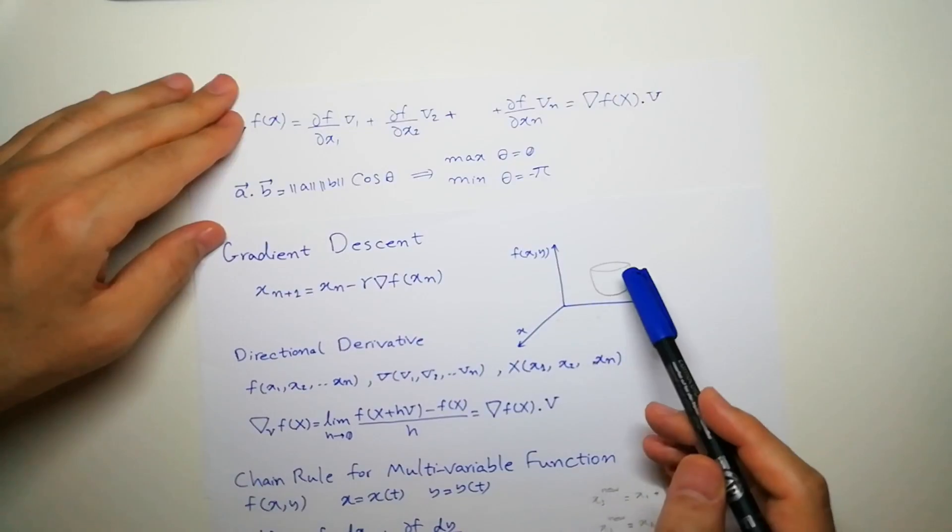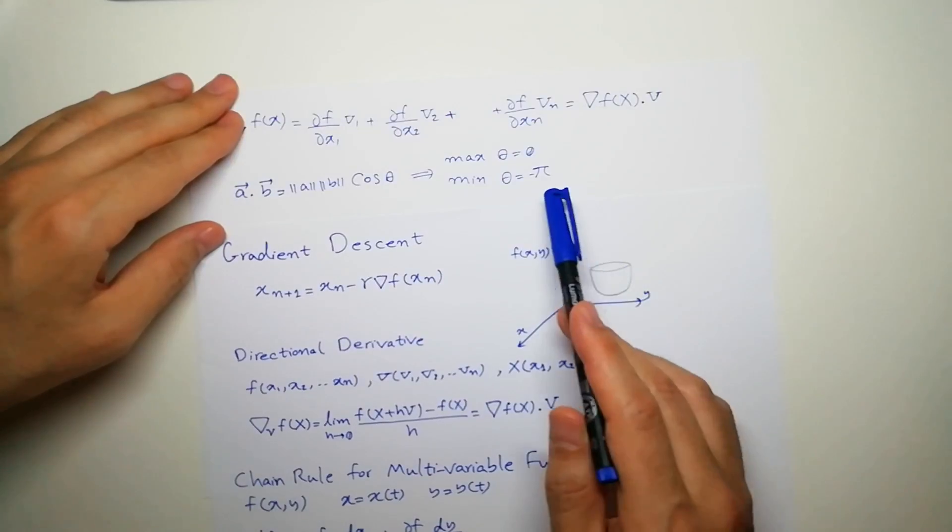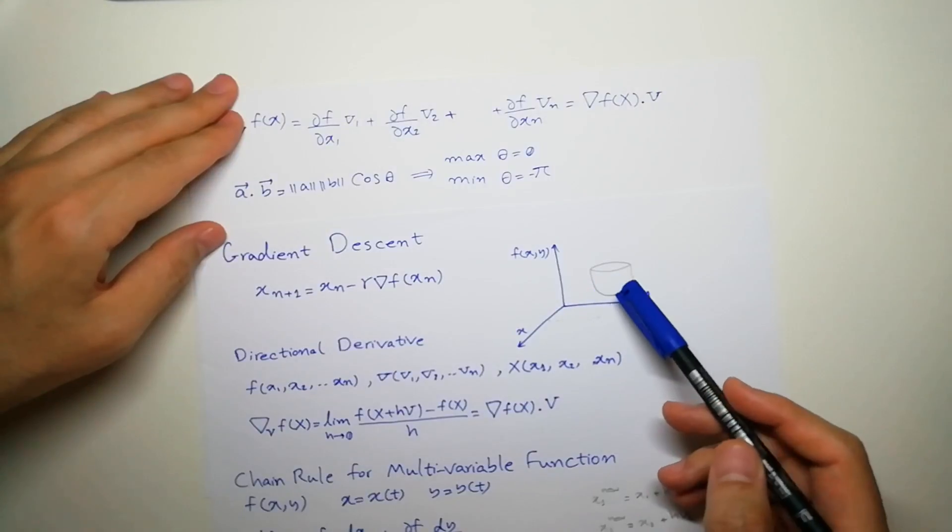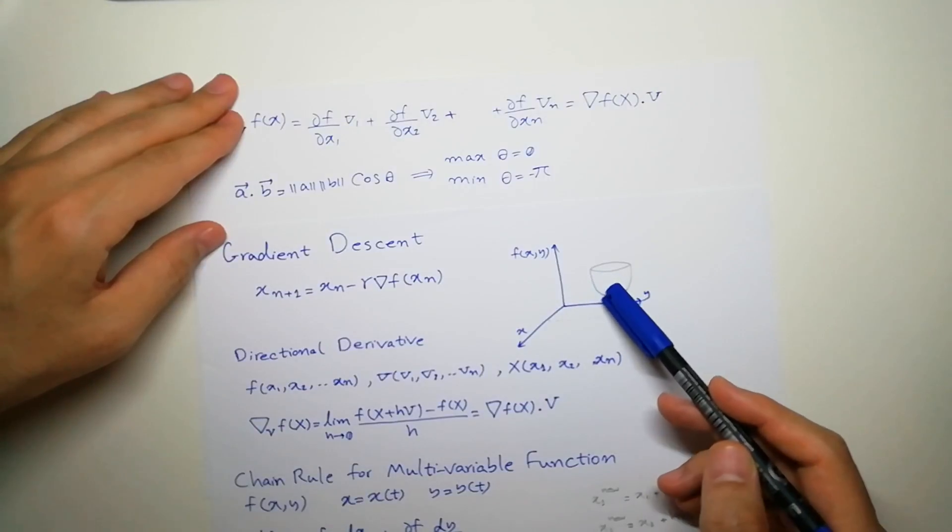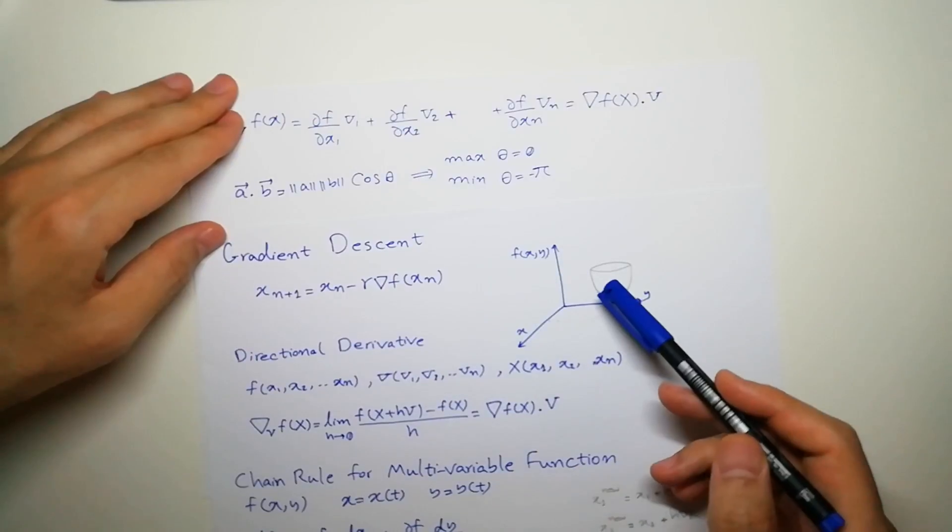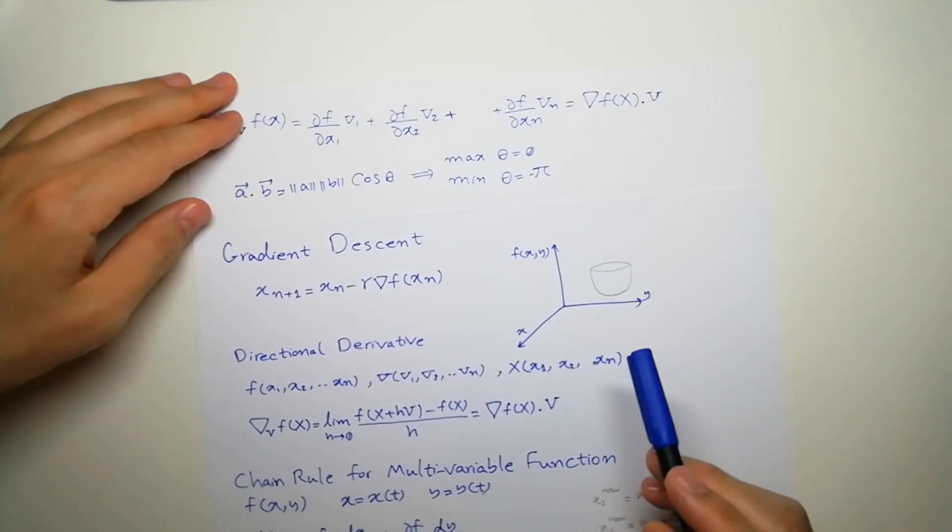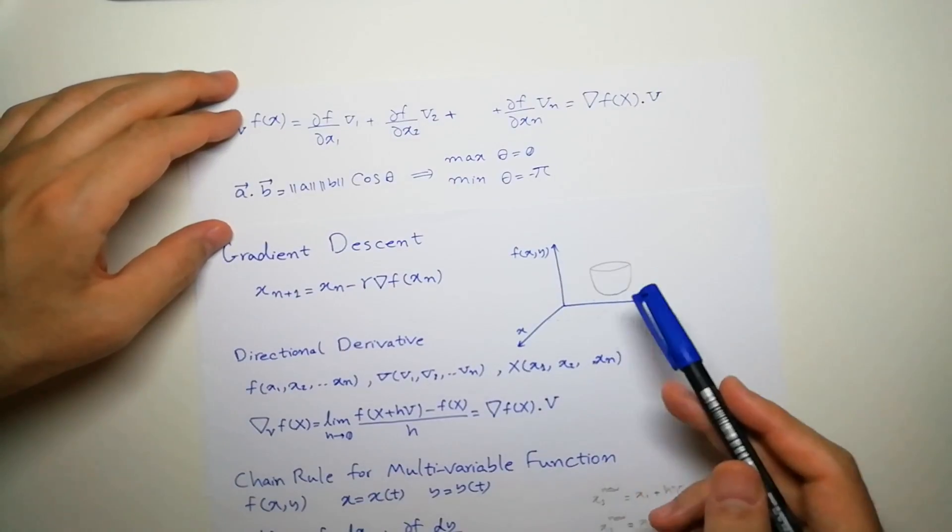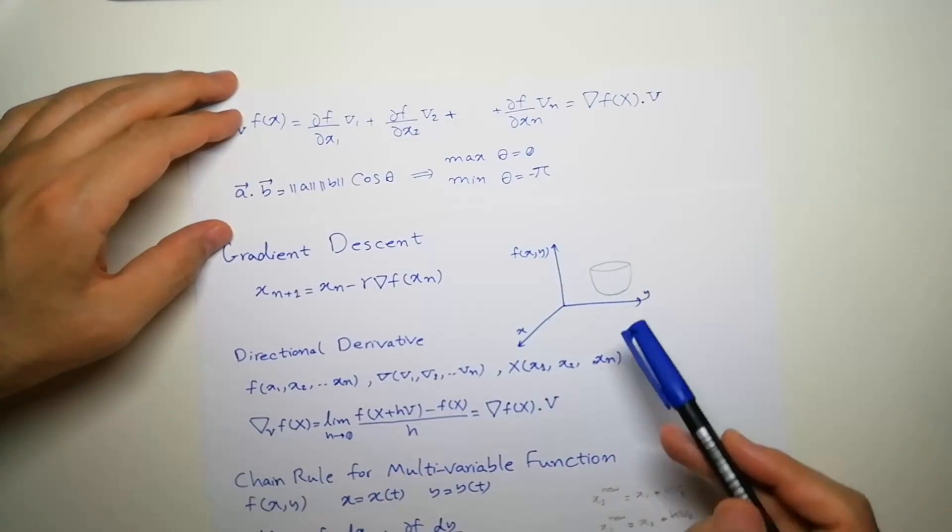So we have to go in this direction. And the direction that we have to go to minimize our function should be exactly opposite of the derivative of the function at that point. It depends on if we want to maximize or minimize. If we want to maximize, we have to go in the opposite direction. If we want to minimize, we have to go in this direction.